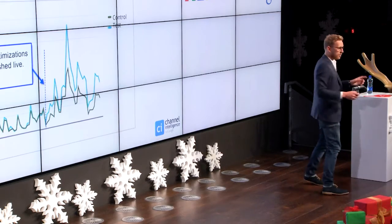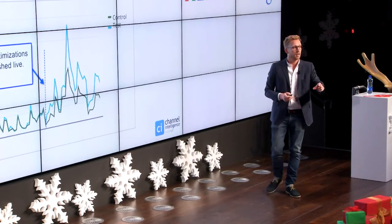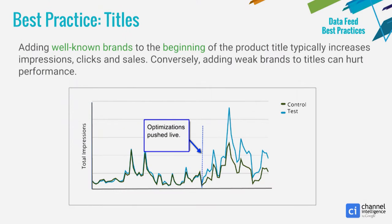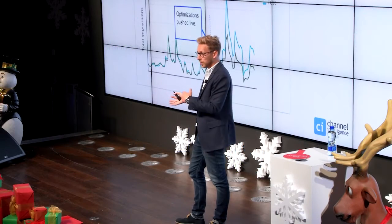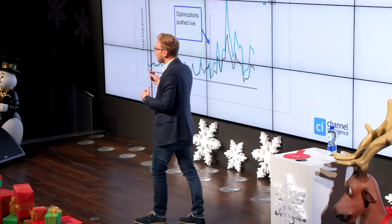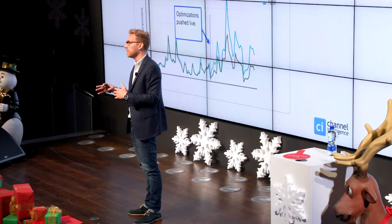I'm going to start with titles. If you've got highly recognizable brands or well-known brands in your catalog, take the brand name and move it to the front of your title. It's really simple, but this consistently shows uplifts in not just impressions, but also clicks and conversions. For one specific Channel Intelligence customer, when they went live with this optimization, there was an immediate uplift in impressions of about 50%. This does come with a warning though — if your brands aren't highly recognizable and you apply this technique, it can actually have a detrimental effect on performance.